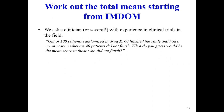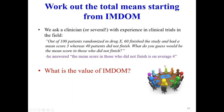We can ask a clinician with experience in clinical trials to inform these parameters. Suppose I ask: out of 100 patients randomized to drug X, 60 finished the study with a mean score of 3, while 40 did not finish. What would you guess is the mean score in those who did not finish? If the clinician answers that the average score is 4, what is the value of the parameter? Is the difference 7, 4, 3, or 1?